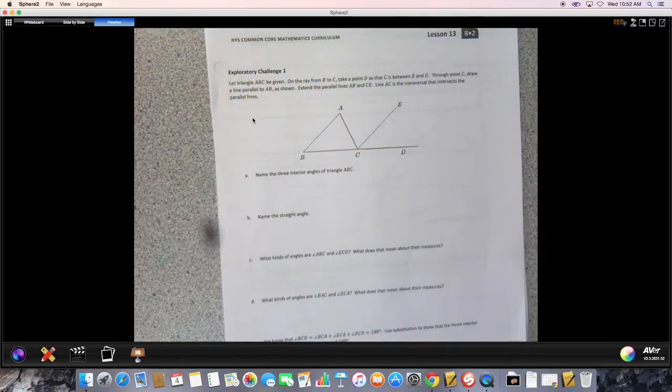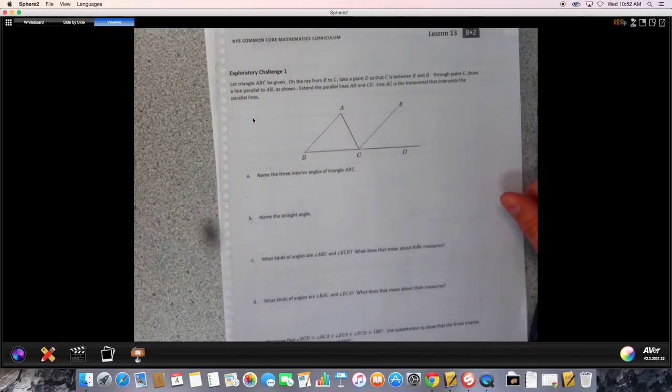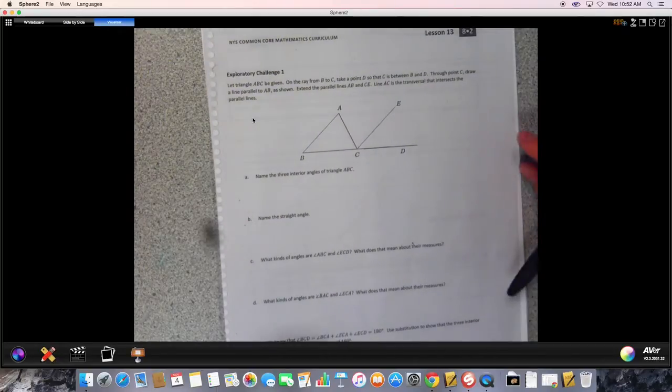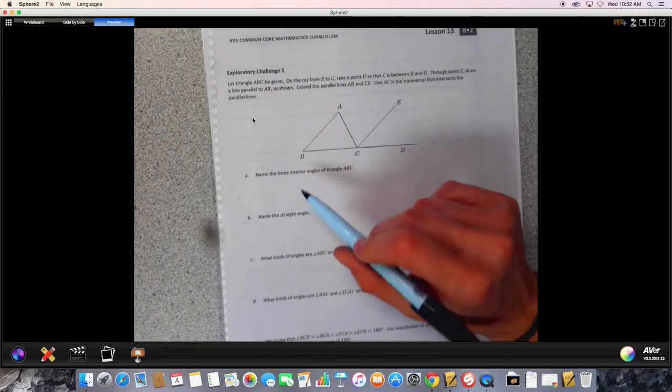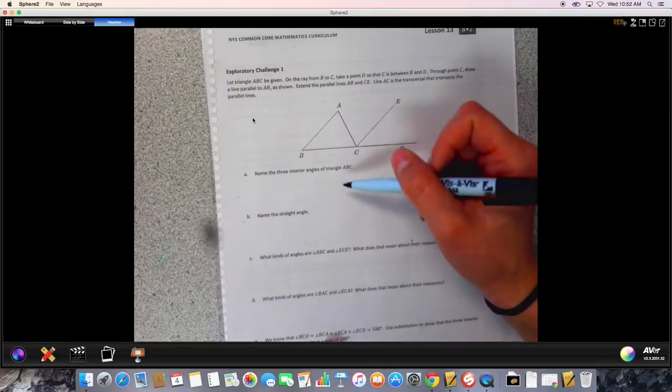This is a little intense in wrapping your brain around, so if you have to stop and re-watch or re-listen, feel free to do that at any time. First and foremost, we have this diagram right here, and it starts off by asking us to name the three interior angles of ABC.